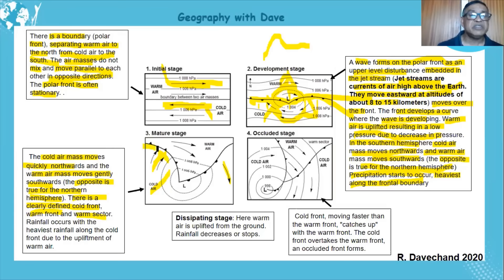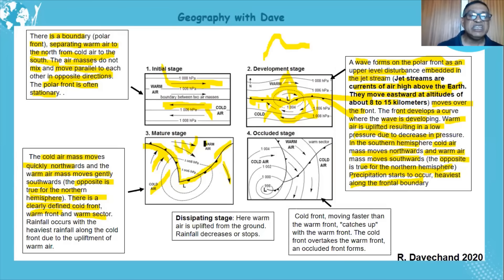It's the opposite in the northern hemisphere. There is a clearly defined cold front and warm front and warm sector. The cold front symbols — I call them thorns — and the warm front symbols — semi-circles — are clearly shown, with the warm sector between them. This is the mature stage. Rainfall occurs.